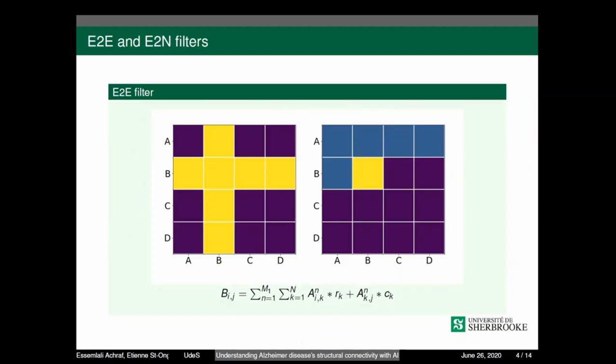The edge-to-edge filter captures the first-order connectivity in the brain networks. It's formed of two one-dimensional convolution filters when applied for the row and when applied over the columns, as demonstrated by the following equation.